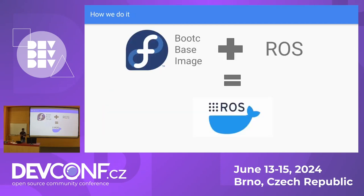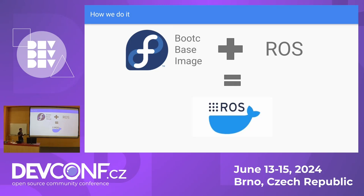Now I come to how we do it. We are going to build a container that has ROS in it. If you see, it is written 'Fedora Bootc base image.' Fedora Bootc base image is basically an image which you can just boot. It is a new technology and you will be hearing a lot about it. The approach is: we will be putting ROS on that base image and creating a container image that has ROS in it.